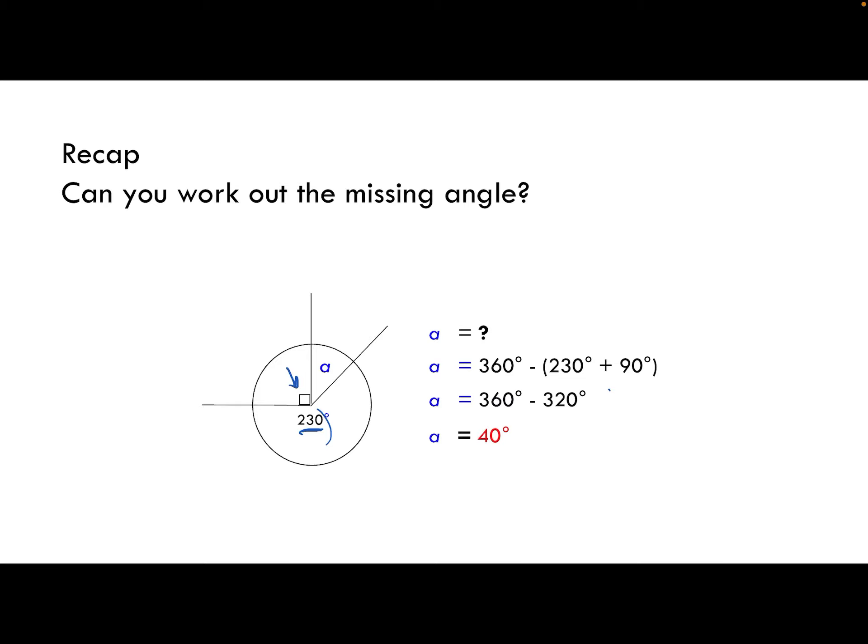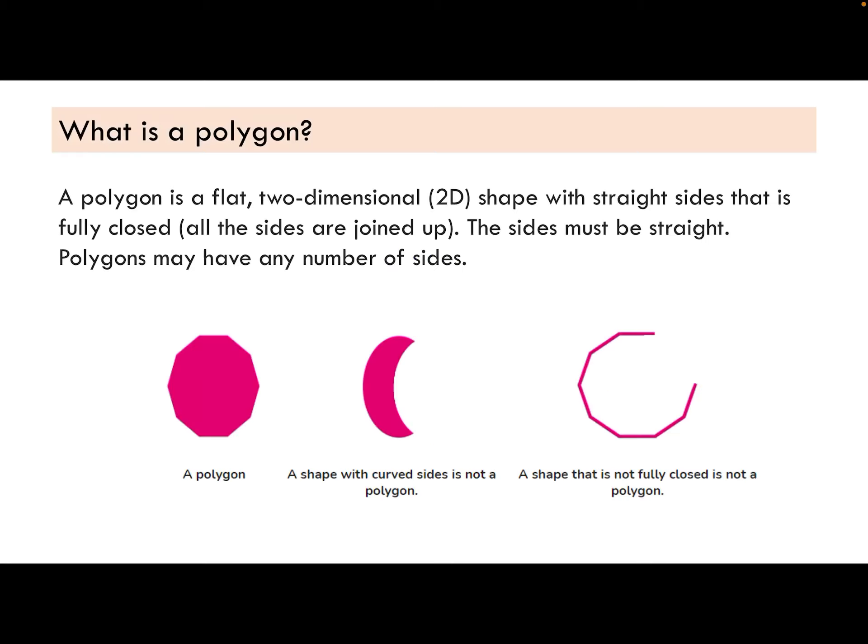So our answer is of course 40. Well done if you got that. So what is a polygon? This is going to be really important because I'm going to say it quite a lot. A polygon is just any flat two-dimensional shape. So things like squares, circles,